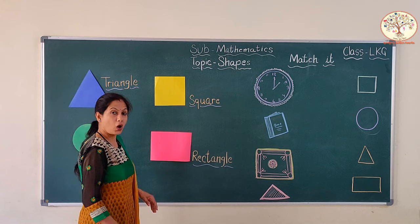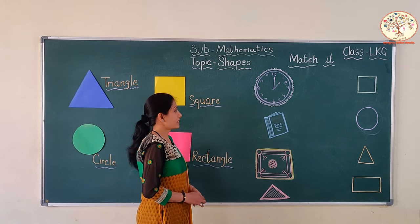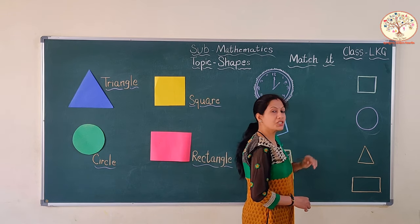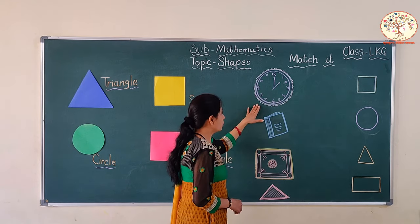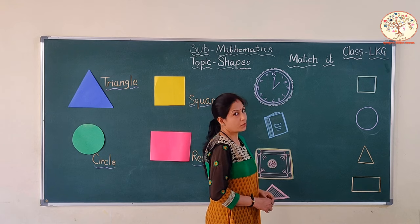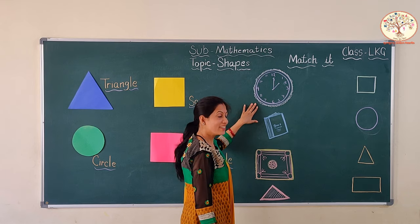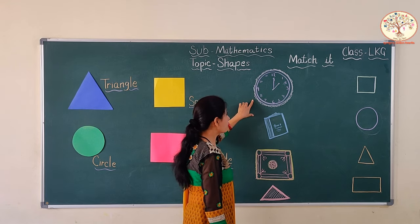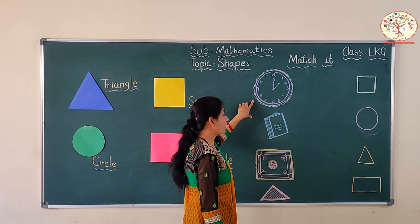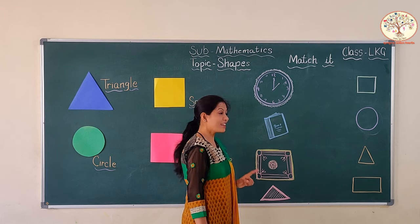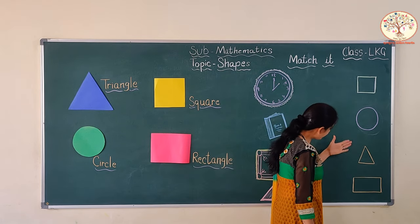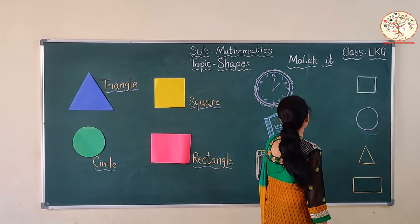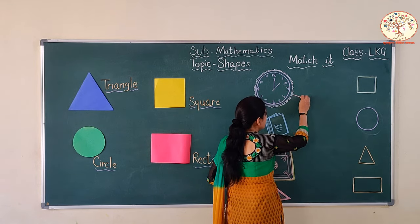Now, we will do an exercise. I have drawn some objects here related to different shapes. We have to match them with their proper shape. What is this? This is a clock. And what is the shape of this clock? This is a circle. Where is the circle here? This is a circle. So, we will match this clock to the circle.